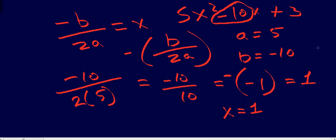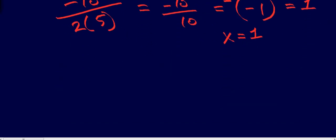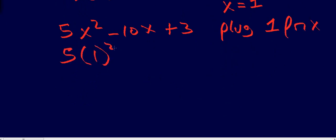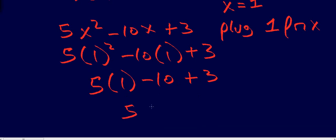And for fun, you can carry that negative sign all the way through if you want. So I'm going to take my formula, 5x squared minus 10x plus 3. I'm going to plug 1 in for x. So now I've got 5 times 1 squared minus 10 times 1 plus 3. So it gives me 5 times 1 minus 10 plus 3, which gives me 5 minus 10 plus 3.